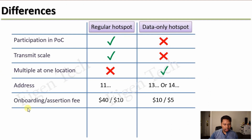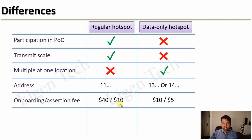Next is the onboarding or assertion fee. The onboarding fee for regular hotspots is $40, which is usually paid by the manufacturers, and the location assertion fee is $10. The first assertion is free, but for subsequent location reassertions you pay $10 subtracted from your HNT balance. For data-only hotspots, the onboarding fee is $10 and the location assertion fee is $5.